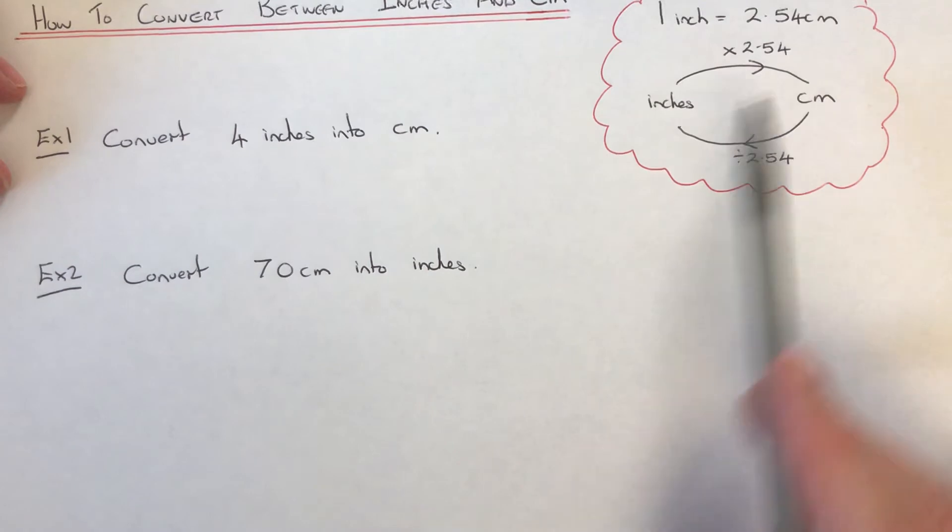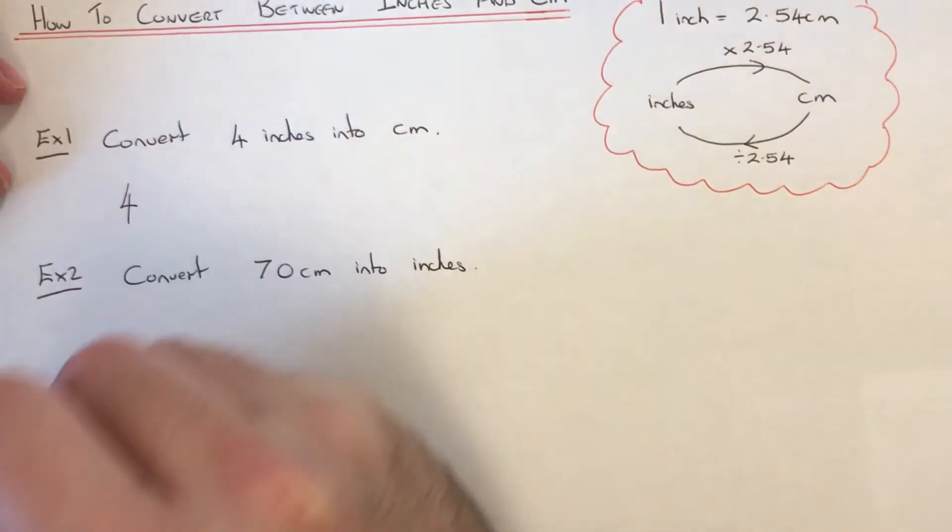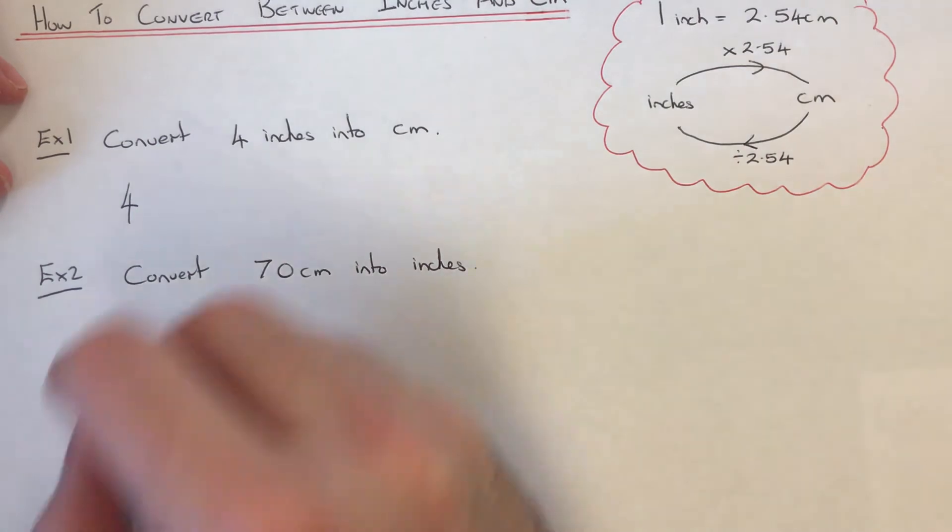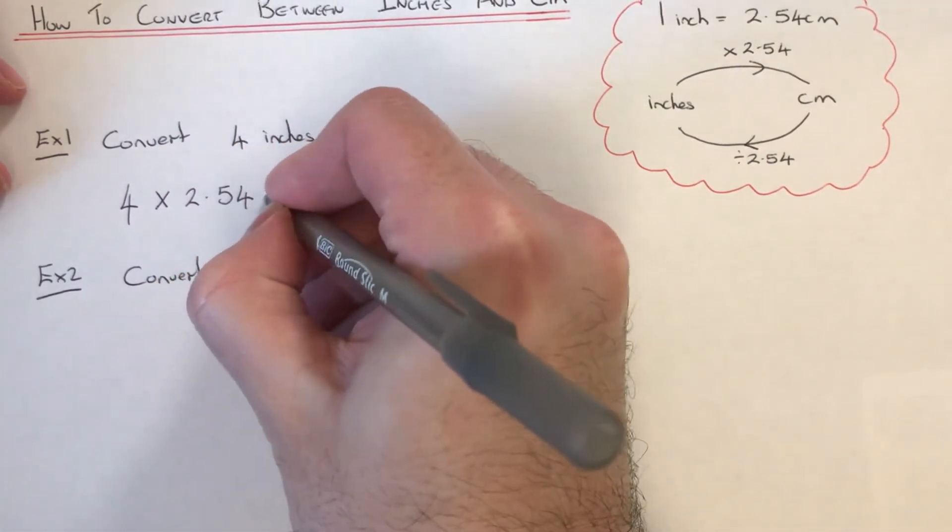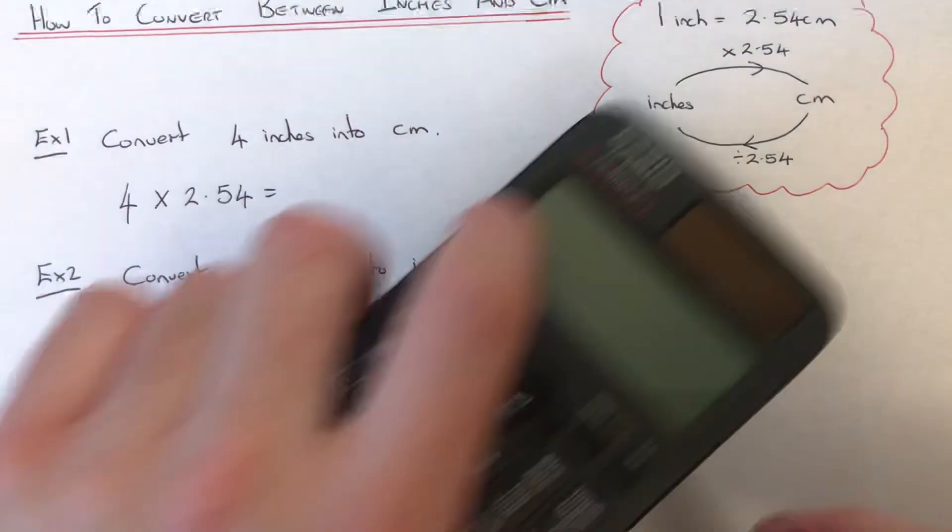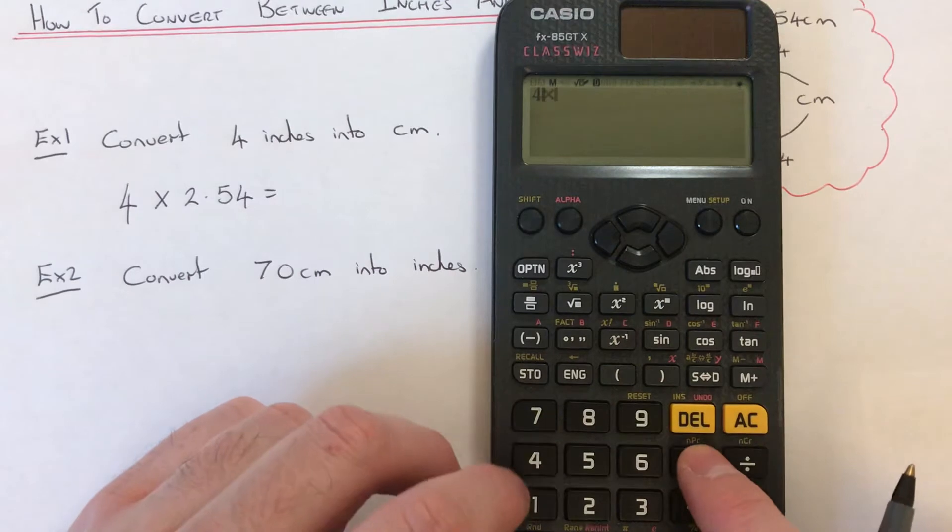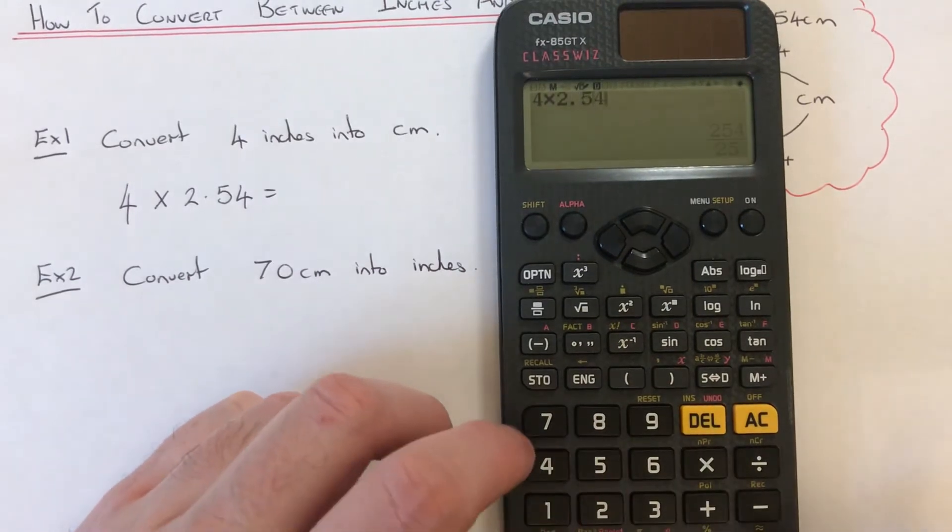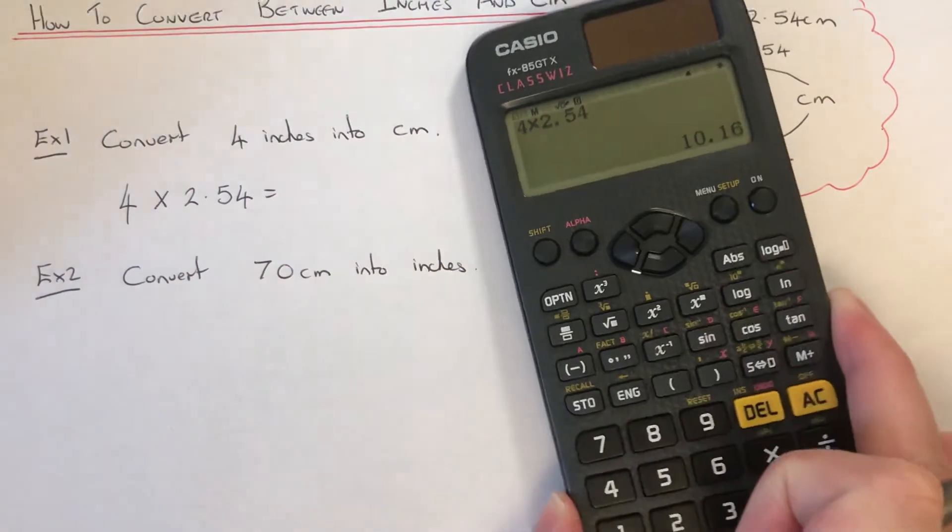So put the number on the next line and we need to times that by 2.54. So get your calculator. We need to do 4 times 2.54, which is 10.16 centimeters.